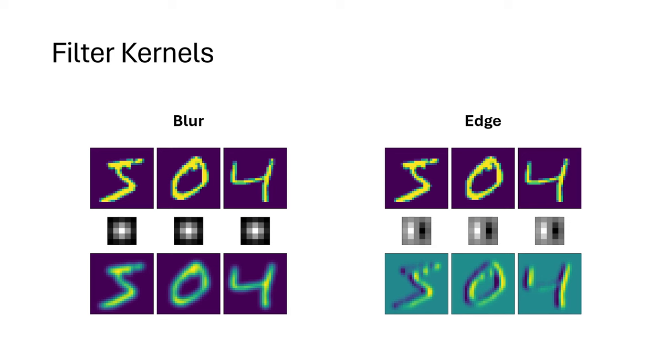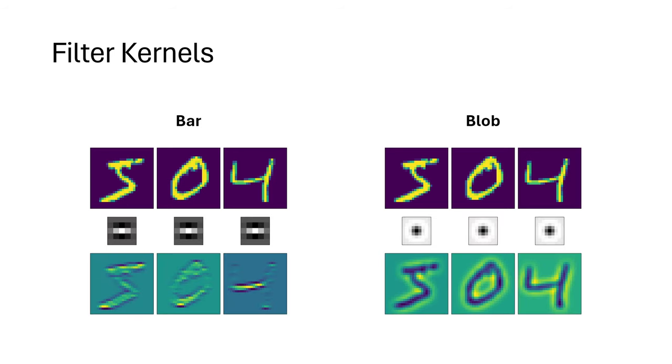Let's briefly review the concept of filter kernels and convolution. Here are two filter kernels, a blur kernel and a vertical edge kernel, being applied to some digits from the MNIST dataset. Note how these kernels find local structure in the image and communicate that by high and low values in the output. Here are two more kernels, a horizontal bar kernel and a blob kernel. Note how the bar kernel finds the horizontal strokes of the 5 and 4, and how the blob kernel pulls out circular areas of negative space.